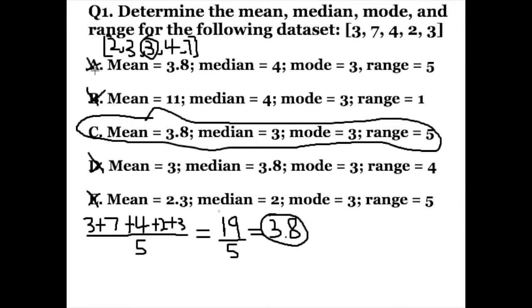Even though we know the correct answer, let's figure out the rest. To find the mode, we want to look for the most occurring number. We only have one seven, one four, and one two in the data set, but we have two threes. Since three is the most occurring number, three is going to be the mode.